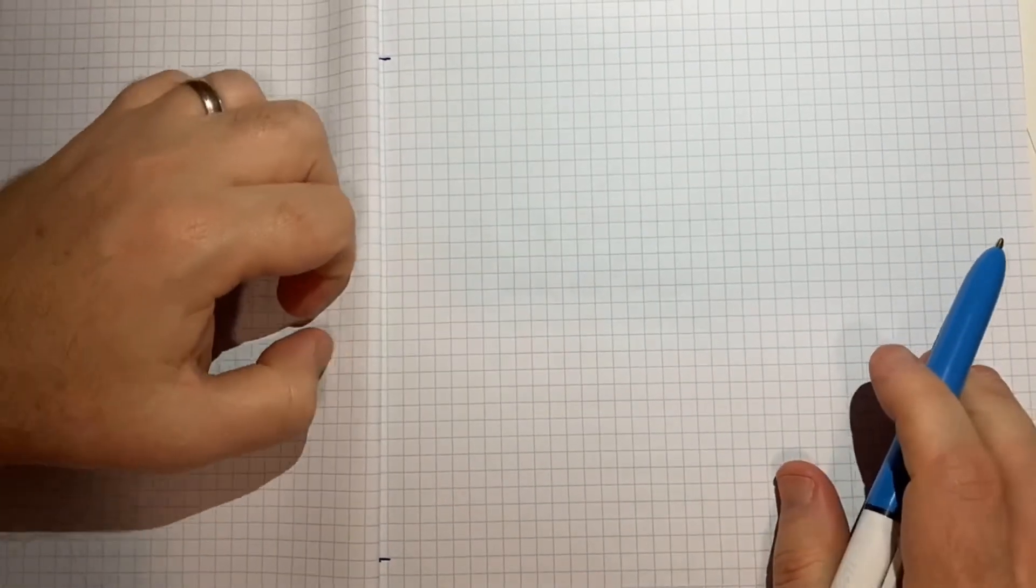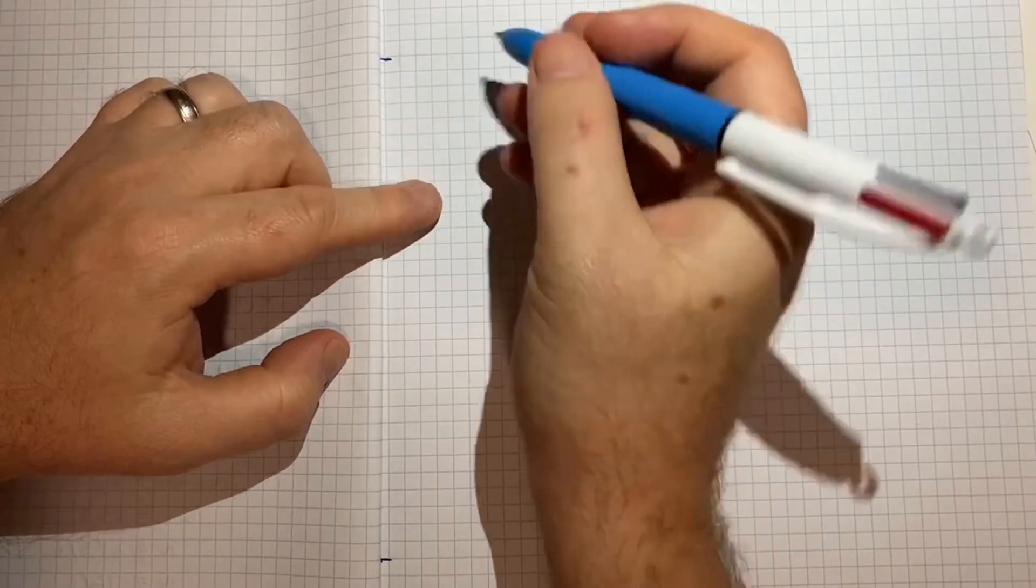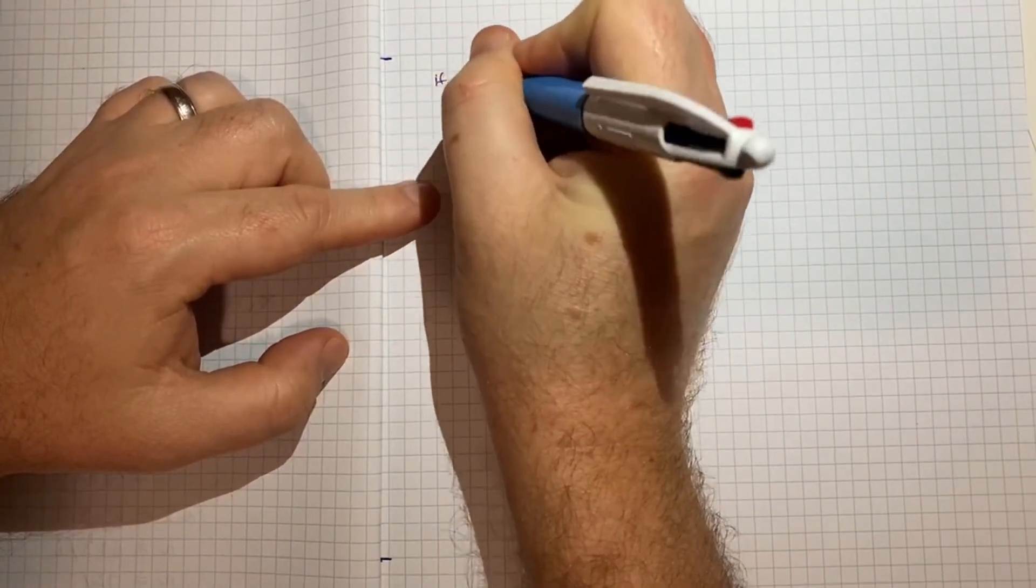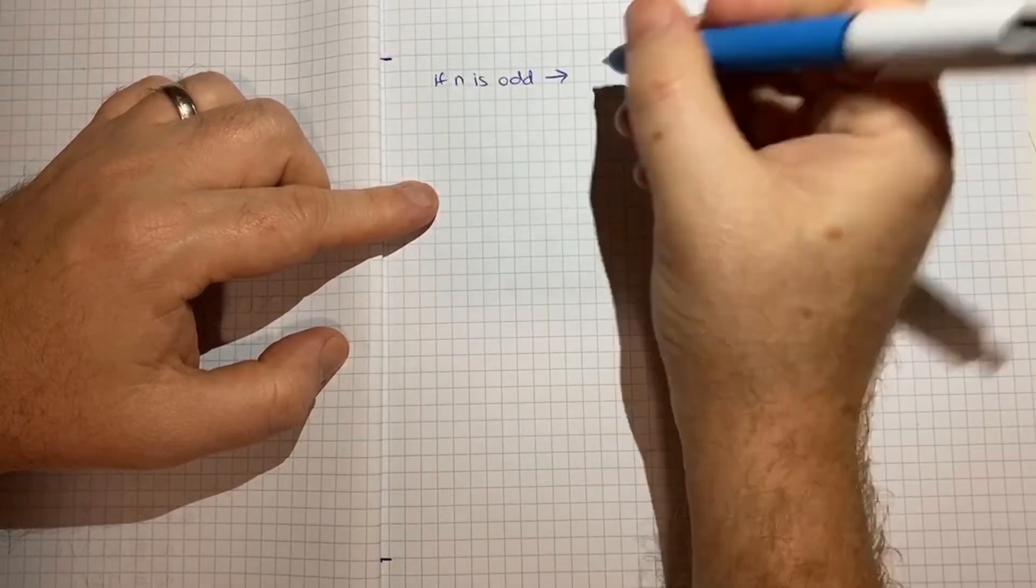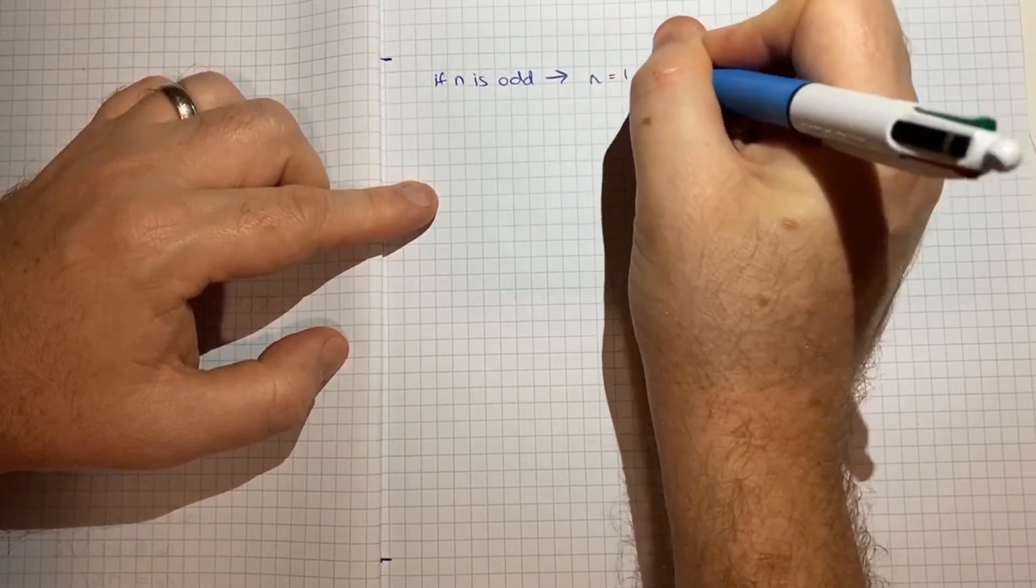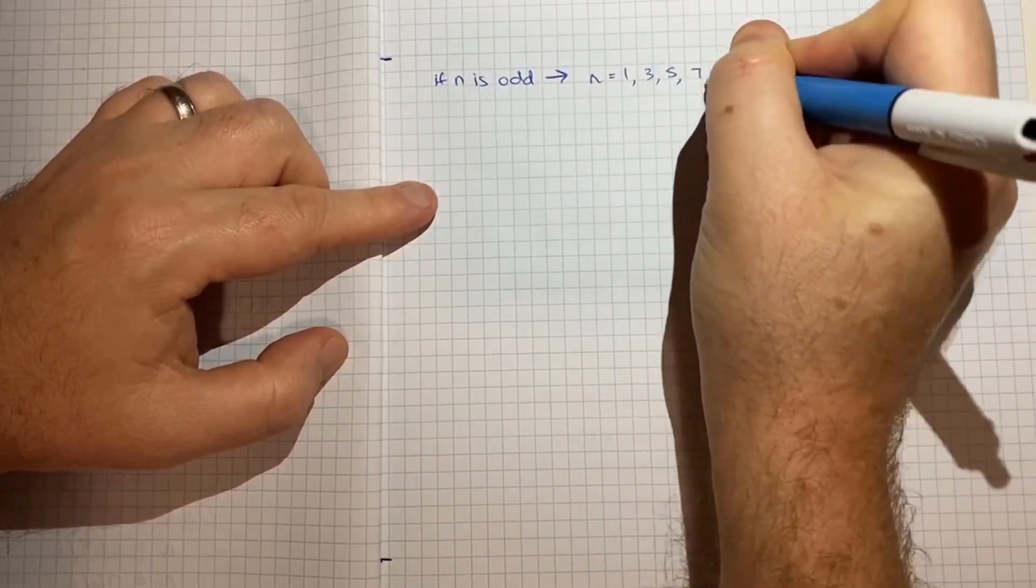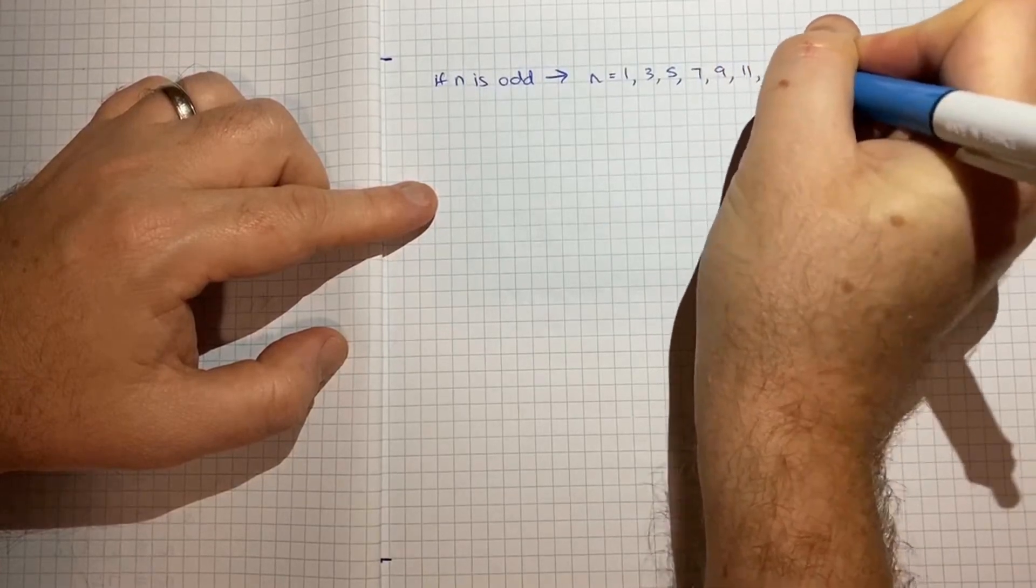So to get started, the first thing to think about is that if n is odd then really what we're saying is n is equal to 1, 3, 5, 7, 9, 11 and so on.